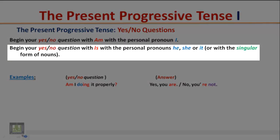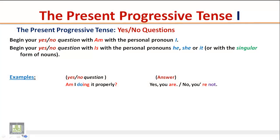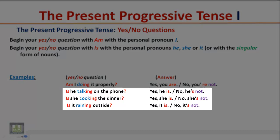Begin your yes/no question with 'is' with the personal pronouns 'he,' 'she,' or 'it,' or with the singular form of nouns. Examples: 'Is he talking on the phone?' — 'Yes, he is.' / 'No, he's not.' 'Is she cooking the dinner?' — 'Yes, she is.' / 'No, she's not.' 'Is it raining outside?' — 'Yes, it is.' / 'No, it's not.'